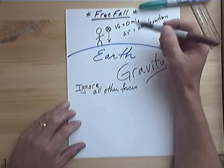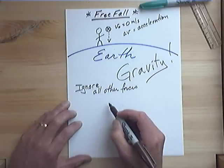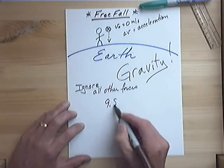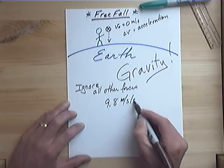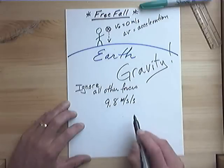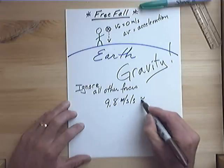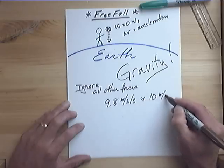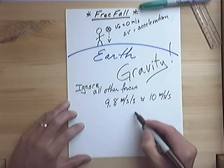So when we drop something, gravity will accelerate objects at 9.8 meters per second every second. We can approximate this as 10 meters per second per second. And this is called little g.